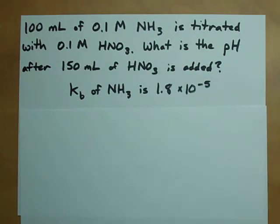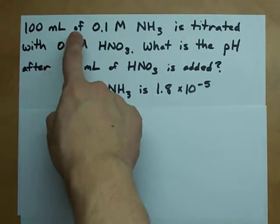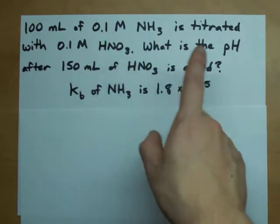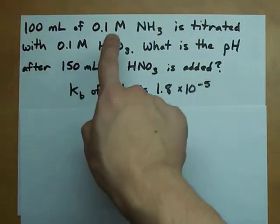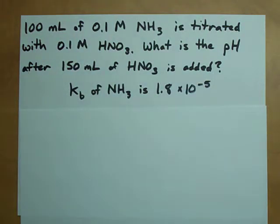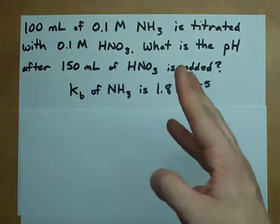Alright guys, we got a little titration going. We got 100 mL of 0.1 molar ammonia, and we're adding 0.1 molar nitric acid. We're adding 150 mL of that nitric acid, and we want the pH of the resulting solution.